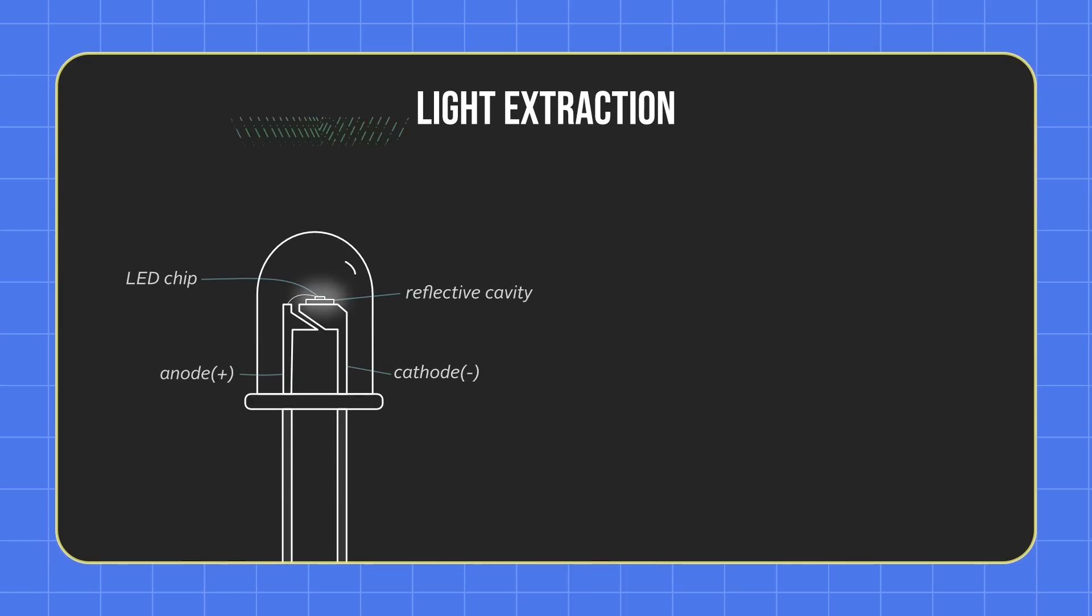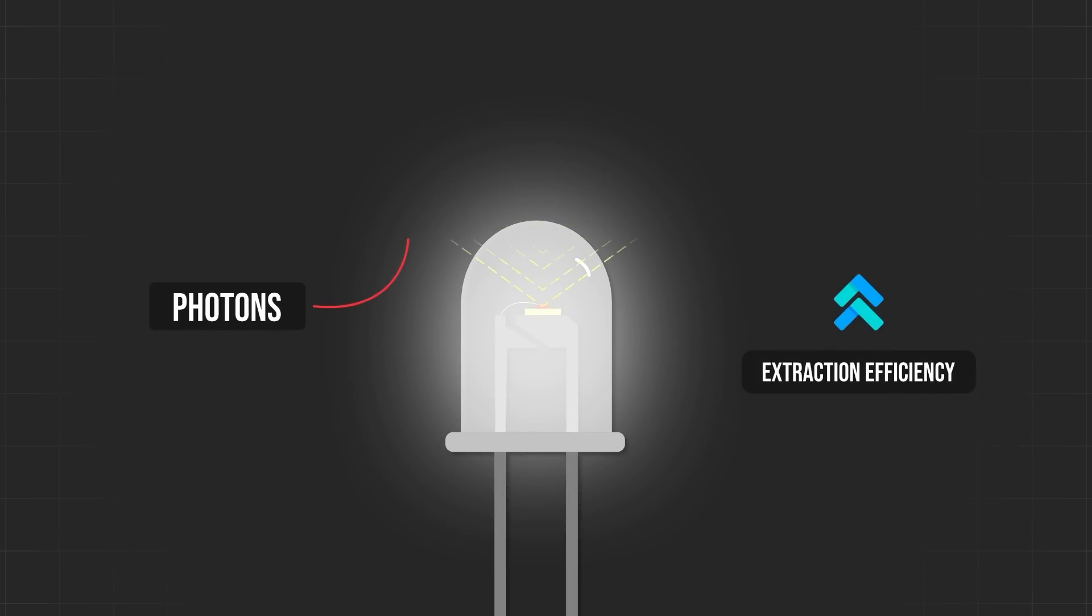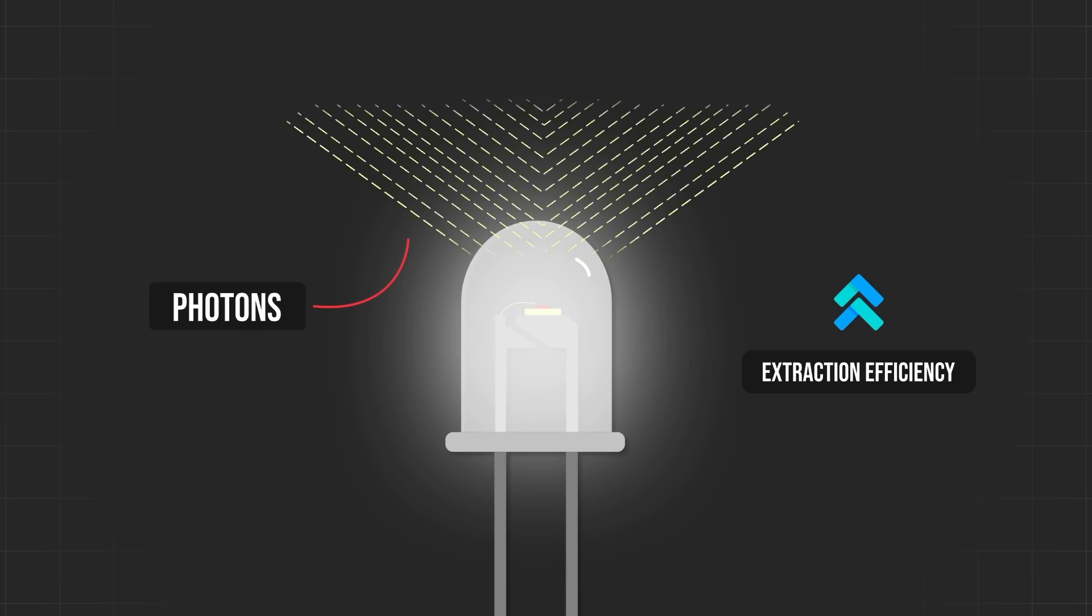Light extraction efficiency, on the other hand, measures how much light is emitted from the LED compared to how much was generated. I like to think of this as how much of the generated light is able to escape the LED so that we can see it. The higher the extraction efficiency, the brighter the light is, because more photons are released instead of being bounced back inside and being reabsorbed or turned to heat.